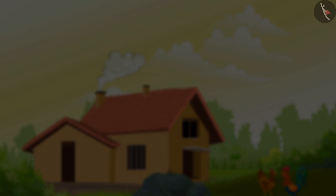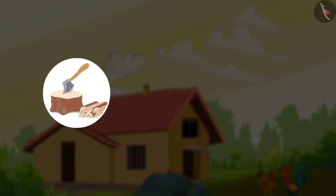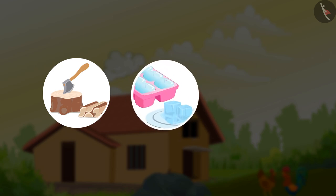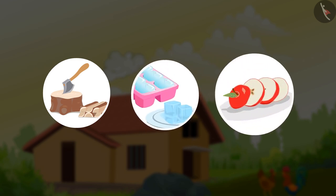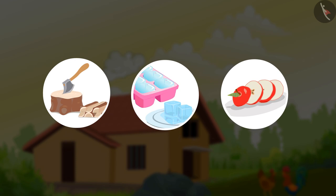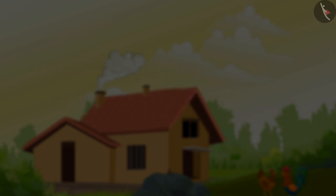Children, today we learnt about physical changes. Chopping wood, mixing coloured stones, making of ice, chopping an apple, mixing water and sand are many examples of physical changes. We will learn about chemical changes in the next video.